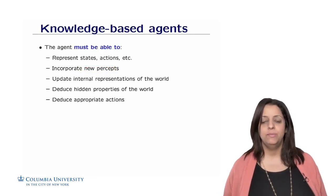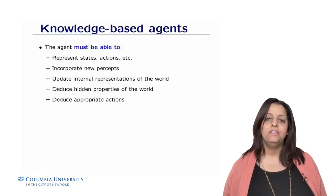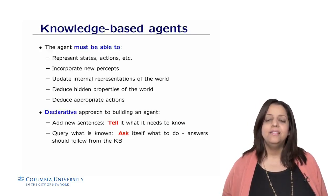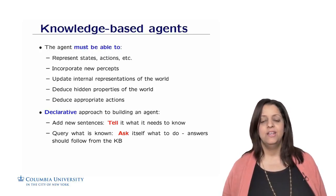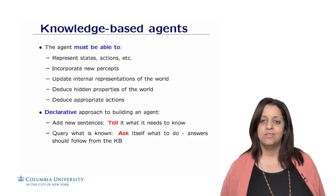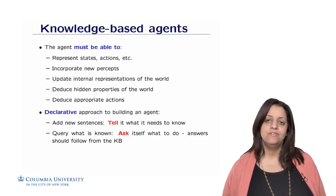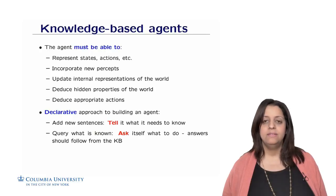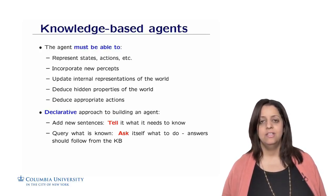Given these two elements, a knowledge-based agent should be able to represent states, create actions, incorporate percepts, update the internal representation of the world, and deduce hidden properties of the world. The goal is to deduce the appropriate actions for the agent. This approach is called the declarative approach, where we build an agent by giving it information through adding new sentences in some representation — via the procedure 'tell.' Initially, we have domain knowledge translated into sentences fed into the knowledge base. As the agent interacts with the environment, it builds its own sentences and enriches the database. The second procedure is 'ask' — query what is known — and answers follow from the knowledge base through logical inference and deduction.